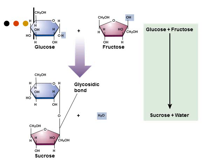This diagram is showing how sucrose is created. At the top, we have our two reactants: glucose, which is a hexosugar, and fructose, which is another type of sugar. We take our glucose and our fructose, join them together by the dehydration reaction, and form the glycosidic bond between the two monomers. In addition, you get a water molecule, and that's what makes it the dehydration reaction.